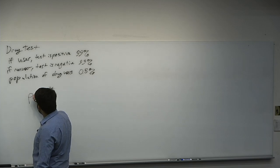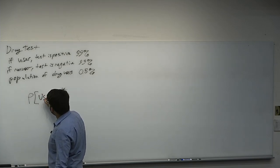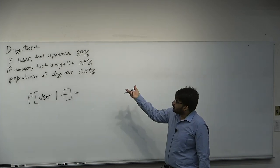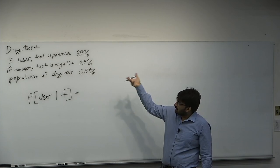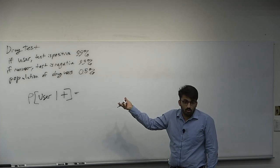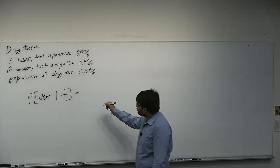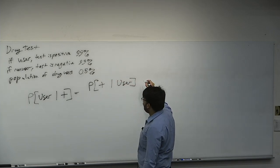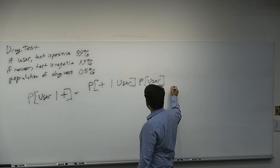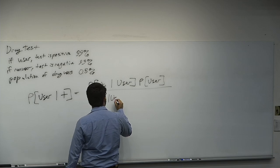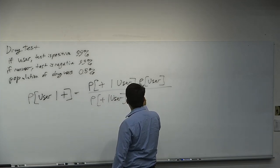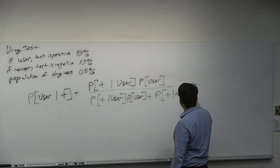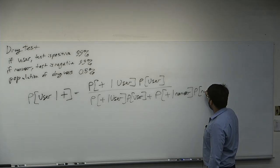Using Bayes Theorem, we can estimate this. We want the probability that they're actually a user given that the test is positive. We write this as: the probability the test was positive given that they're a user, times the probability that a random person is a user, divided by — using the law of total probability — the probability the test came back positive given they're a user, times the probability they're a user, plus the probability the test came back positive given they're a non-user, times the probability they're a non-user.